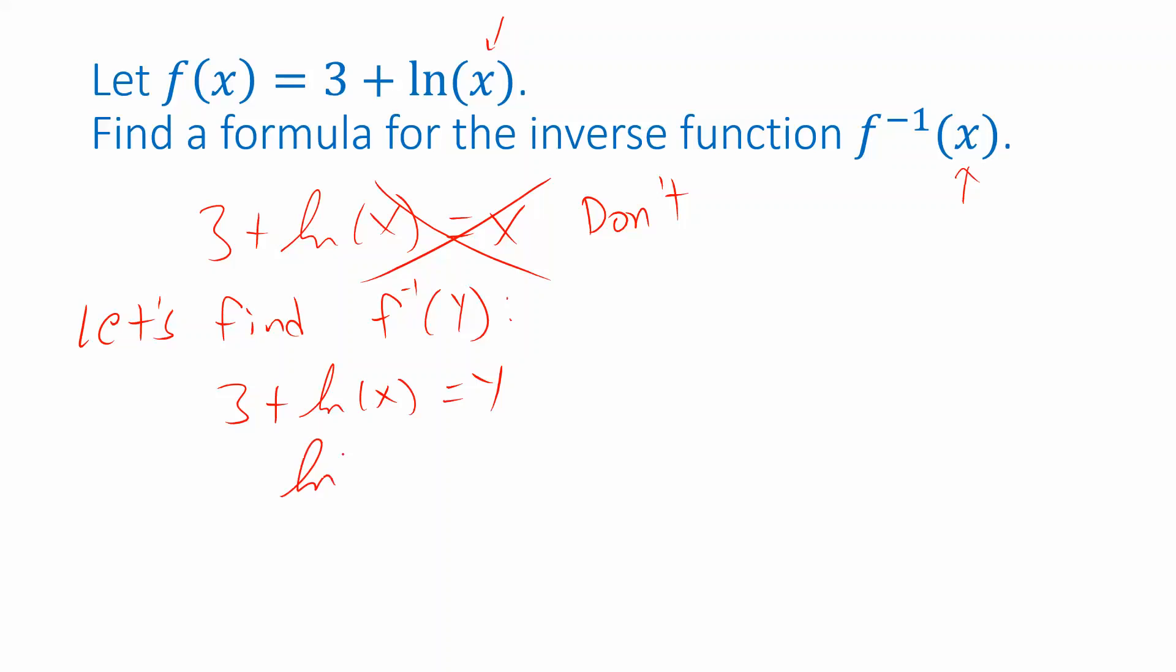So I will subtract 3 from both sides and then I need to undo the natural logarithm. And just like the natural logarithm undoes exponentiation, exponentiation undoes the natural logarithm. So e to the natural log of x should be equal to e to the y minus 3. Exponentiate both sides like this, the point being that the left side simplifies to just x.